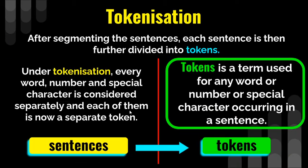The next step is tokenization. After segmenting the sentences, each sentence is then further divided into tokens. If you have a house, the walls are built with bricks - these bricks are actually tokens. After segmenting the sentences, each sentence is divided further into tokens. Tokens mean words, but not only words - also numbers and special characters. Under tokenization, every word, number, and special character is considered separately, and each of them is now a separate token.